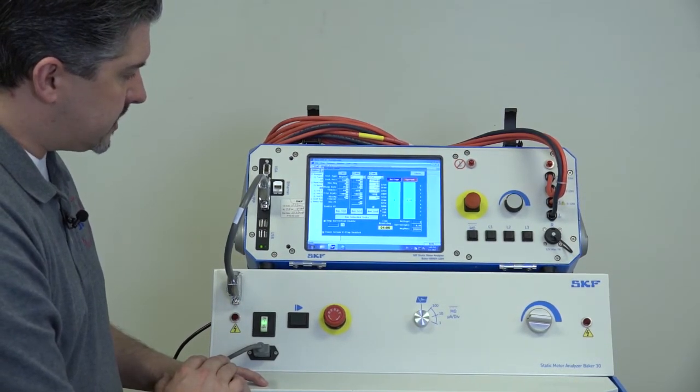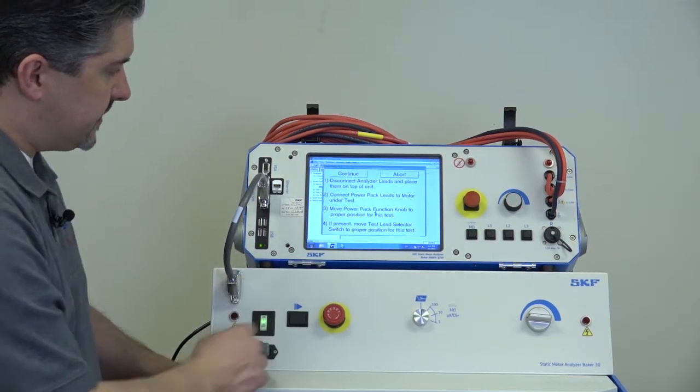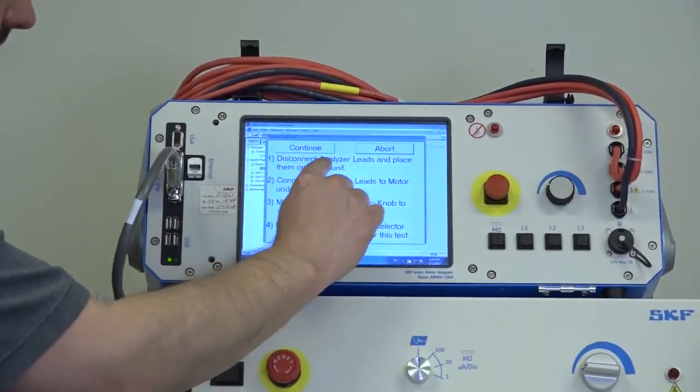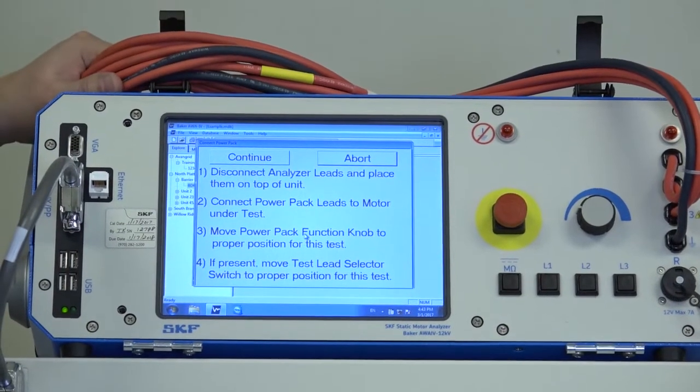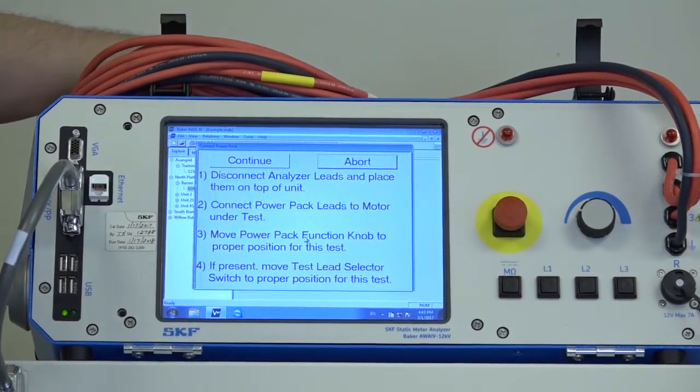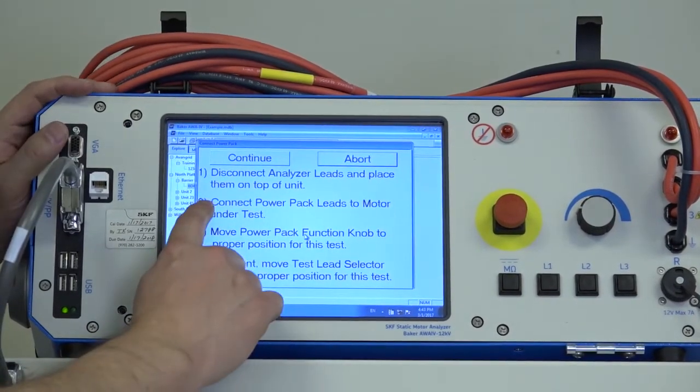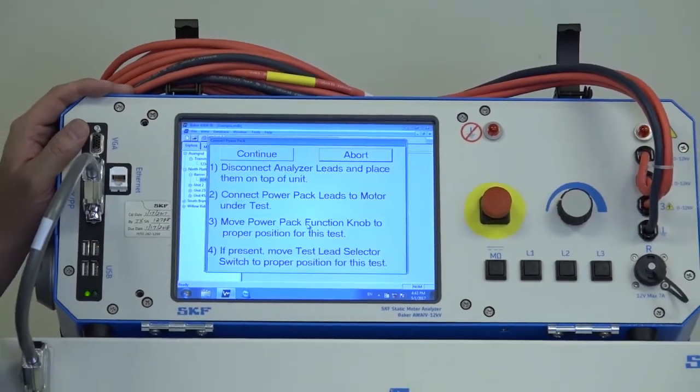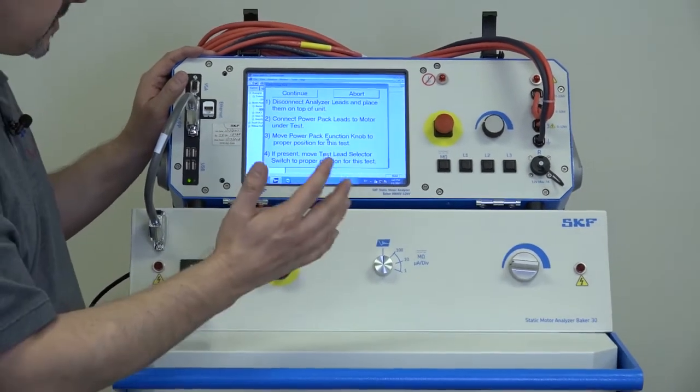When you're ready to initiate the test, you can hit run test, and then you have an on-screen set of instructions. Number one says disconnect the analyzer leads and place them on top of the unit. So that's the normal AWA leads. When we're using the PowerPak, we don't use these leads. Put them up on the tester so we don't get confused about what we're connecting. Step two, connect PowerPak leads to the load on test. So the PowerPak leads that I showed you earlier that come out of the bottom of the unit will connect to our load, to our motor, our circuit.